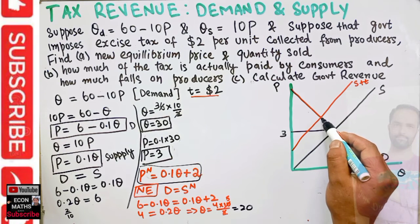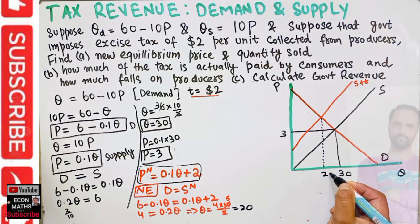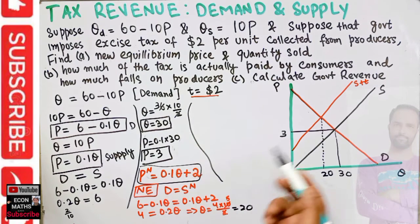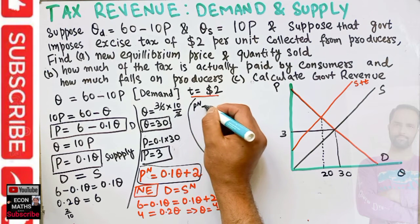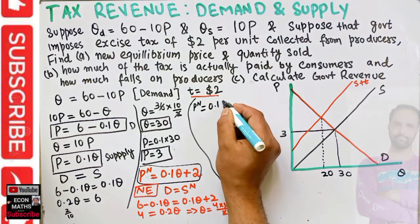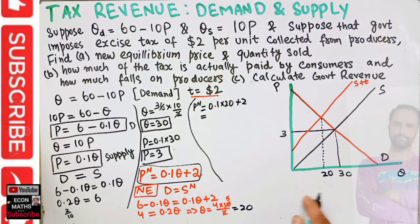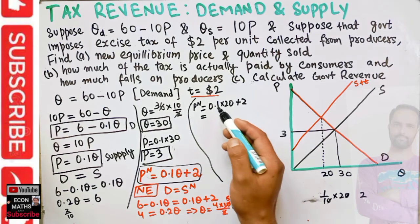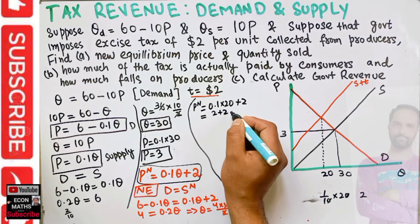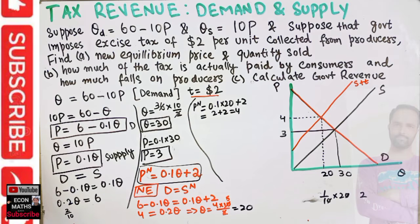After the imposition of the per unit tax, the quantity produced will be 20. The new equilibrium price is found by plugging q equals 20 into the new supply function: p_new equals 0.1 times 20 plus 2, which equals 2 plus 2 equals 4. So our new equilibrium price is 4.